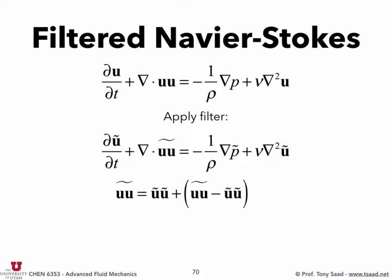This difference represents all the subgrid quantities that went through the grid for the quantity uu. So uu-tilde is the quantity uu that has been captured, and uu-tilde minus u-tilde u-tilde gives you whatever we couldn't capture with the grid. Recall the Reynolds-averaged Stokes equations — we ended up with something similar, like the average of u-prime u-prime, which we said we need to model. The same idea applies here — we're going to call this the subgrid stress tensor.